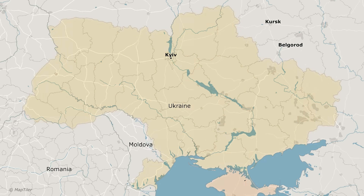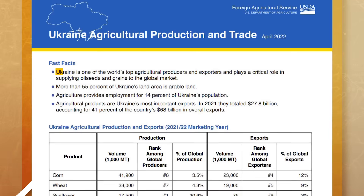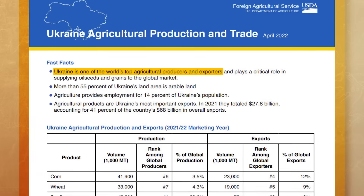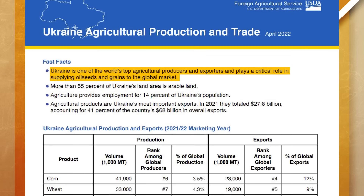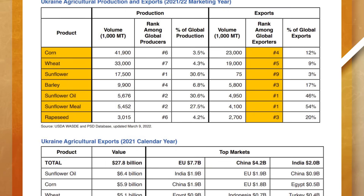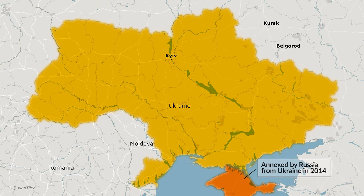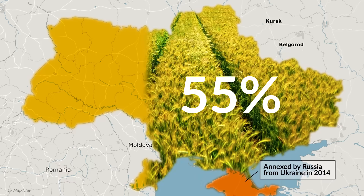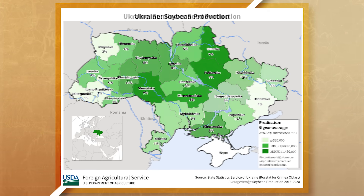For example, let's talk about the country of Ukraine. In 2022, the Department of Agriculture stated that Ukraine is one of the world's top agricultural producers and exporters, and plays a critical role in supplying oil seeds and grains to the global market. Looking at the data, Ukraine is one of the top 10 global exporters for seven different crops. This is mainly due to the distinct geographic characteristics of the country — more than 55% of Ukraine's land is arable land, which is why Ukraine is known as the breadbasket of Europe. Ukraine produces a variety of crops for the world, which helps increase the world's food supply.